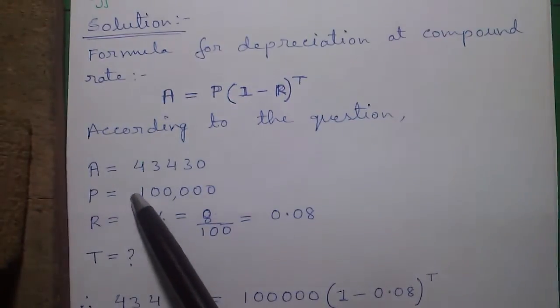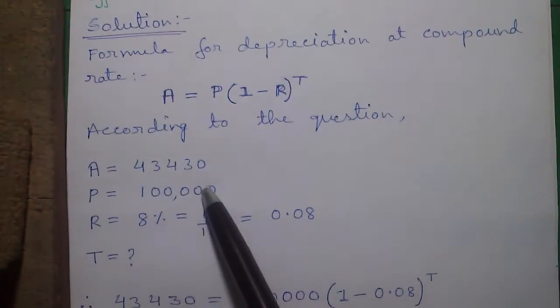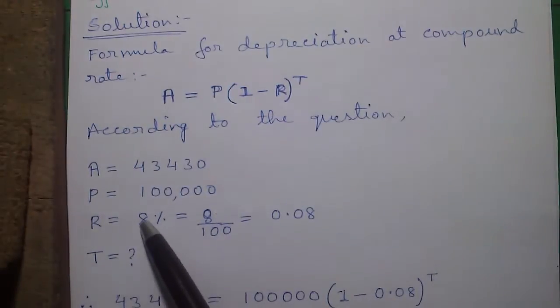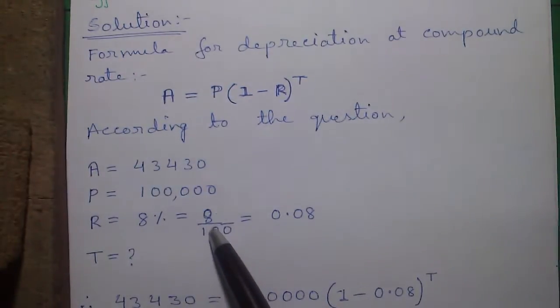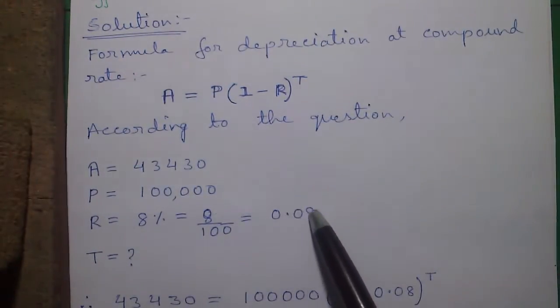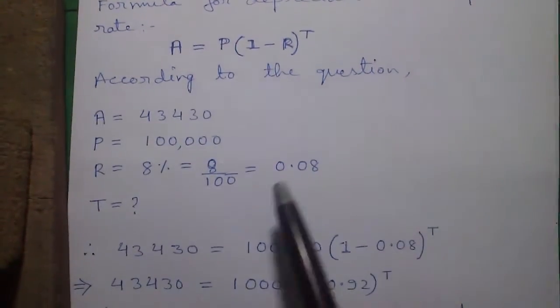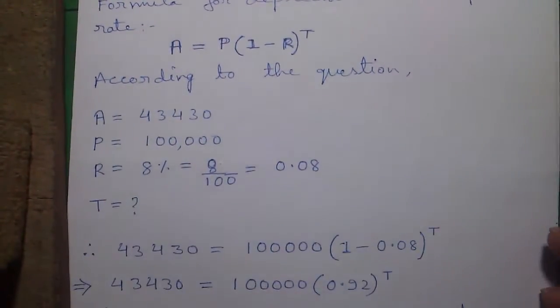And our P or principal or our initial amount is 1 lakh. And R is 8% or 8 divided by 100 or 0.08. So we have to calculate the T or the effective life.